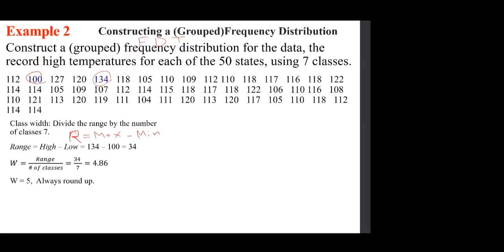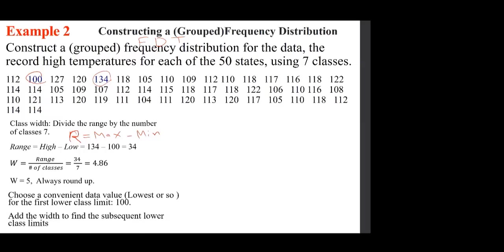Now we want to choose a convenient value as the lowest number. These numbers are straightforward, so you can choose 100 as the starting point. You don't have to use 100 — you can use other numbers, but they must be less than or equal to the minimum. Be careful: if you start too low and the width is slightly larger than actual, you may not reach the largest value.